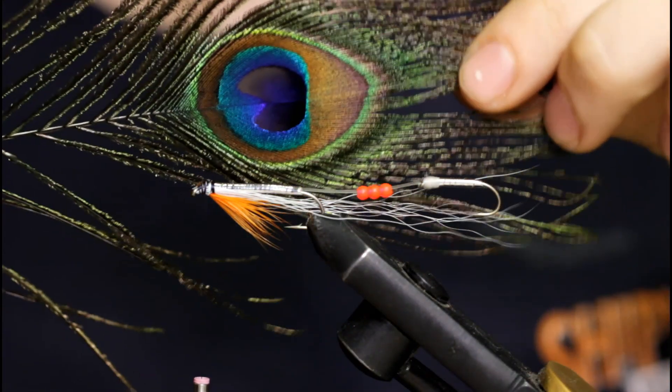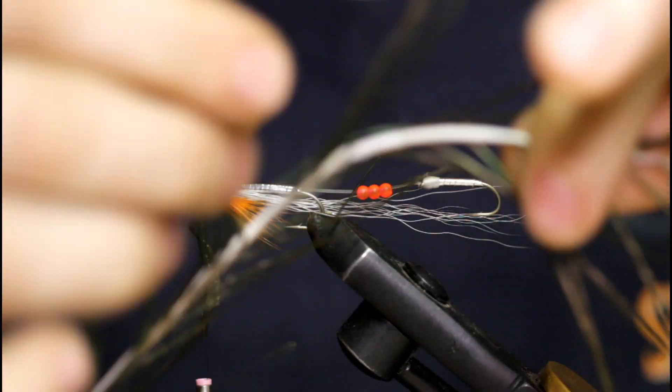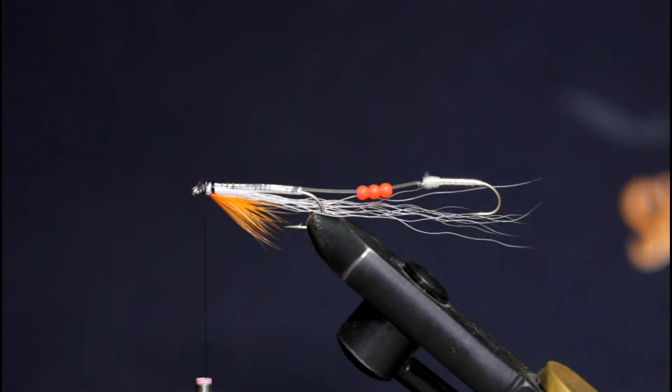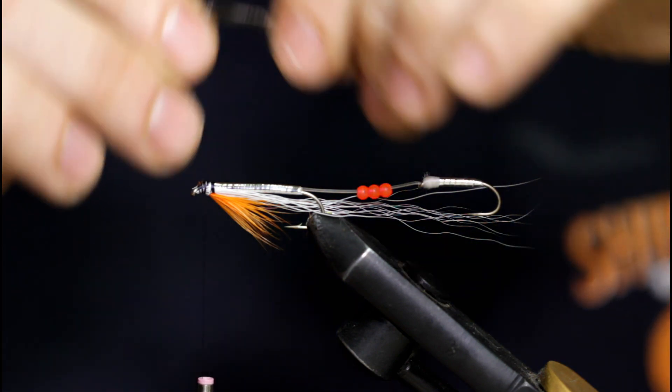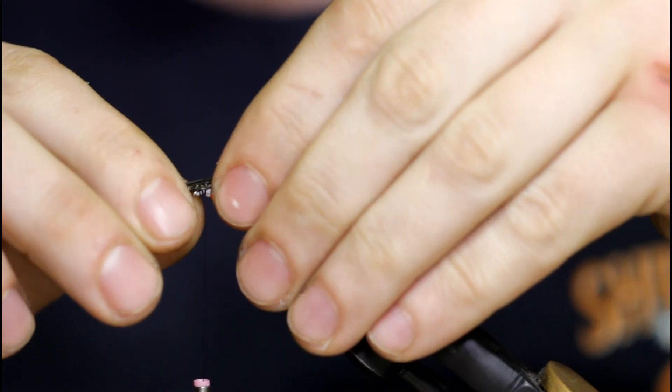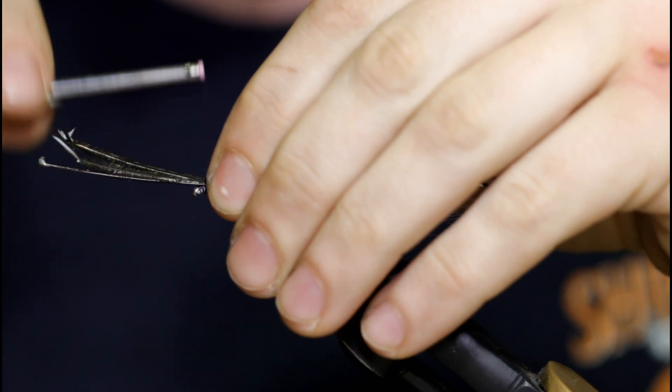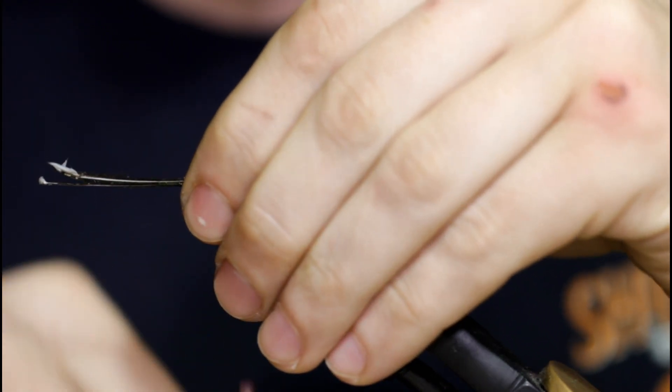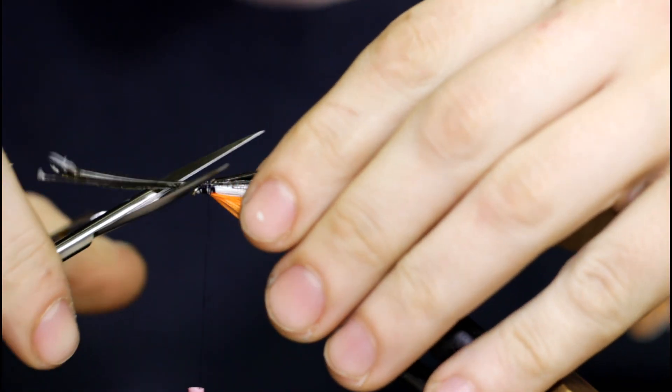So I'm going to come in with some peacock herl next. I'm going to grab four or five strands of this peacock herl. I'm just going to set this on top, same length as the hair. Like so. Grab the thread, take a few loose wraps forward. Come in and snip off these butt ends.